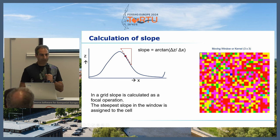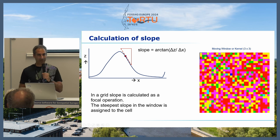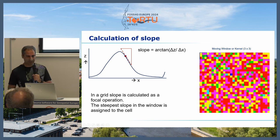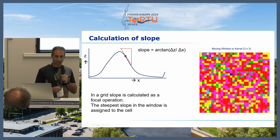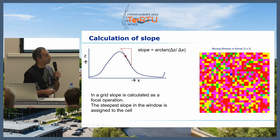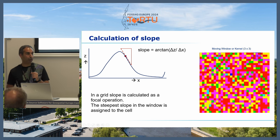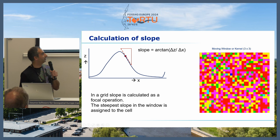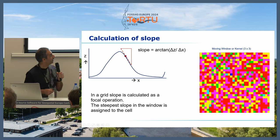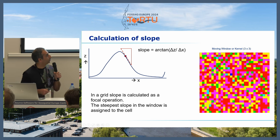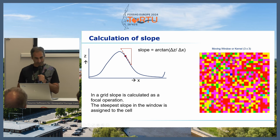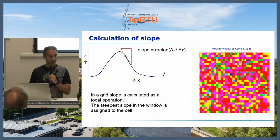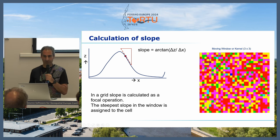A raster is not aligned, so what happens — and maybe you've never realized this — is that when you calculate slope or flow direction, it uses a moving window of three by three pixels and assigns the steepest slope to the center pixel. As a consequence, you will lose the boundary because there is no data, and that's what all slope algorithms do when applied to a raster.